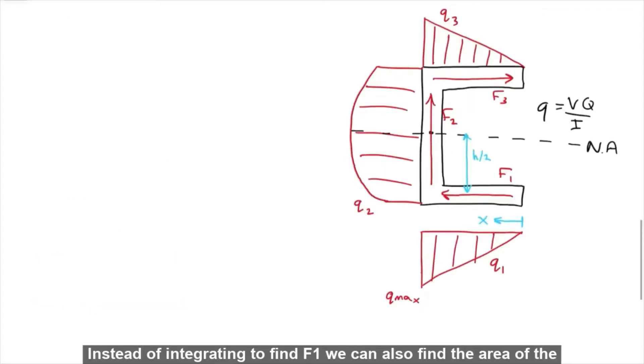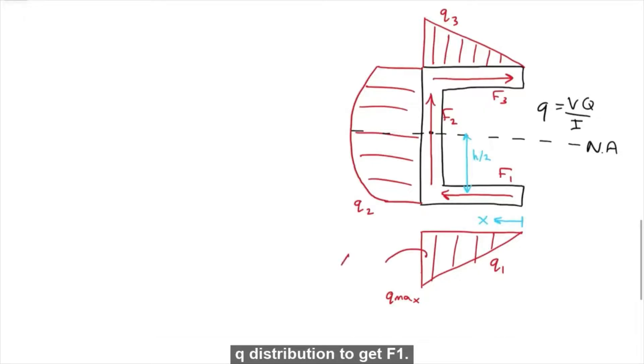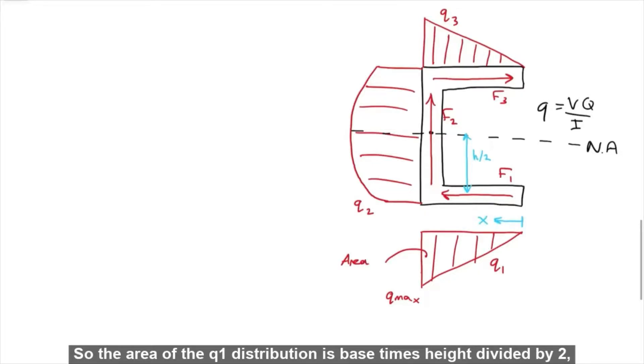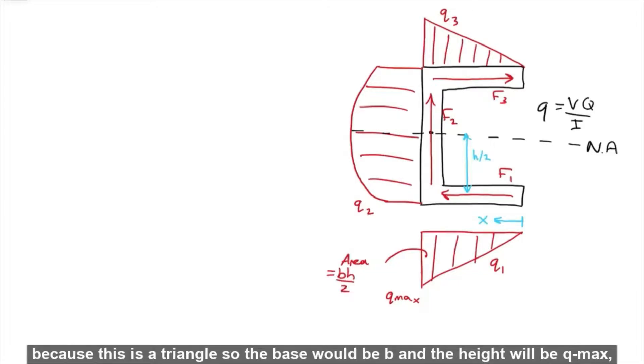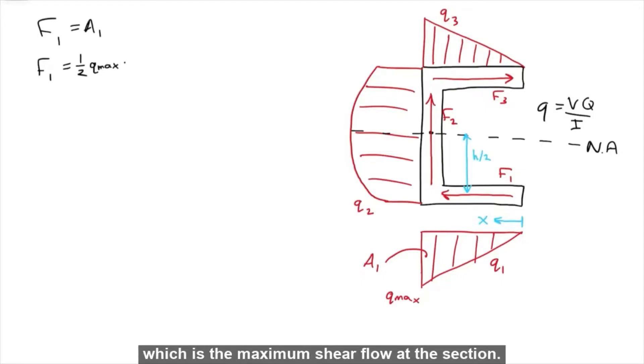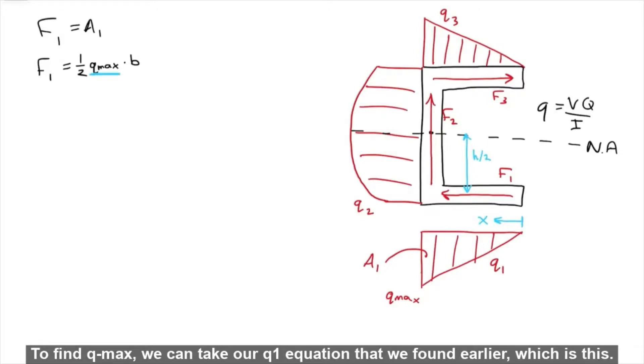Instead of integrating to find F1, we can also find the area of the Q distribution to get F1. So the area of the Q distribution is base times height divided by 2, because this is a triangle. So the base will be B, and the height will be Q max, which is the maximum shear flow at this section. To find Q max, we can take our Q equation that we found earlier, which is this.